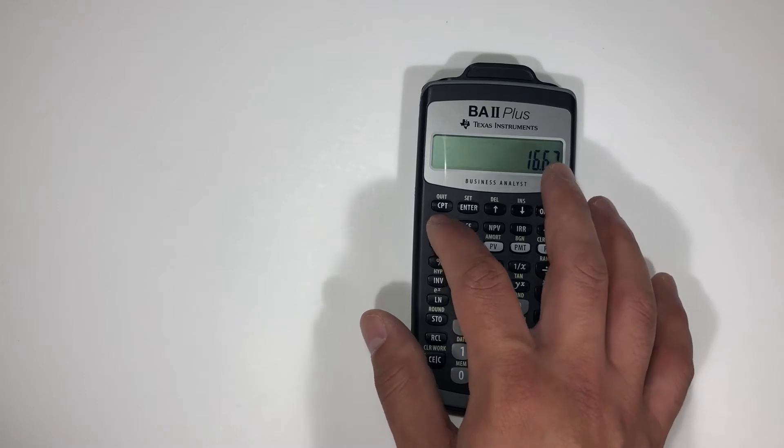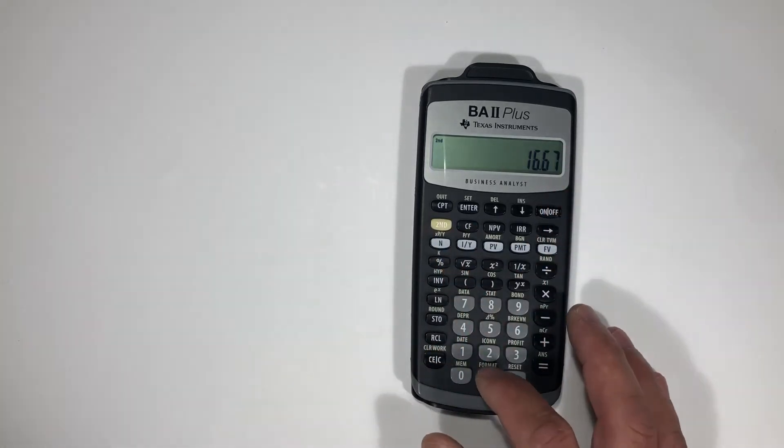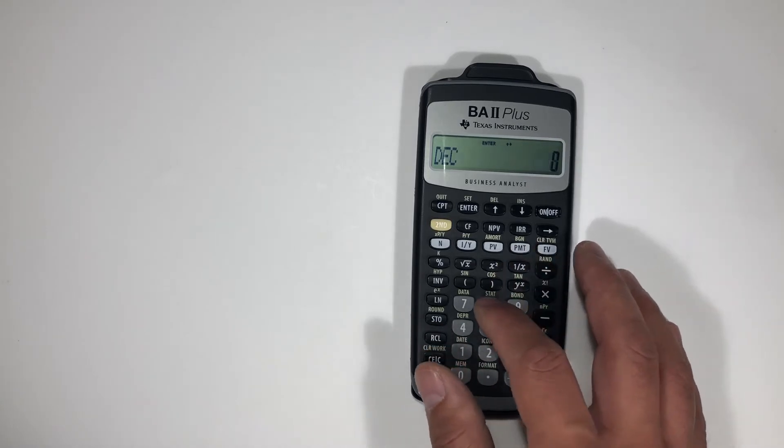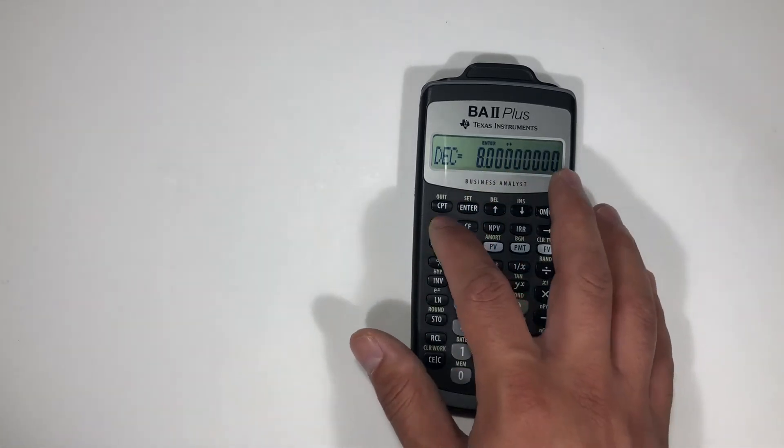So let's change that second format. Let's go ahead and make it eight digits so we can go as far out as we need to. Second quit.